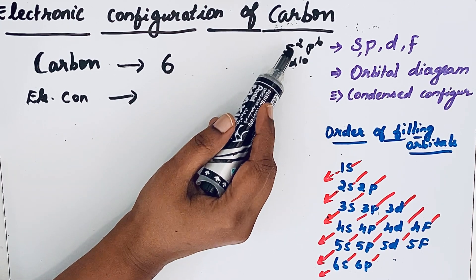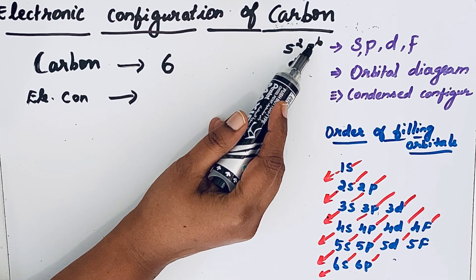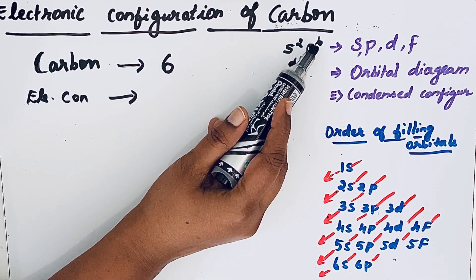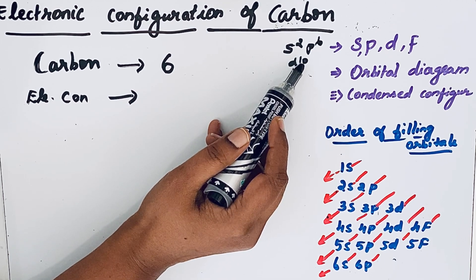S orbital, the maximum number of electrons is 2, so it is represented like s2. P, maximum number of electrons 6, and in d orbital the maximum number of electrons 10.